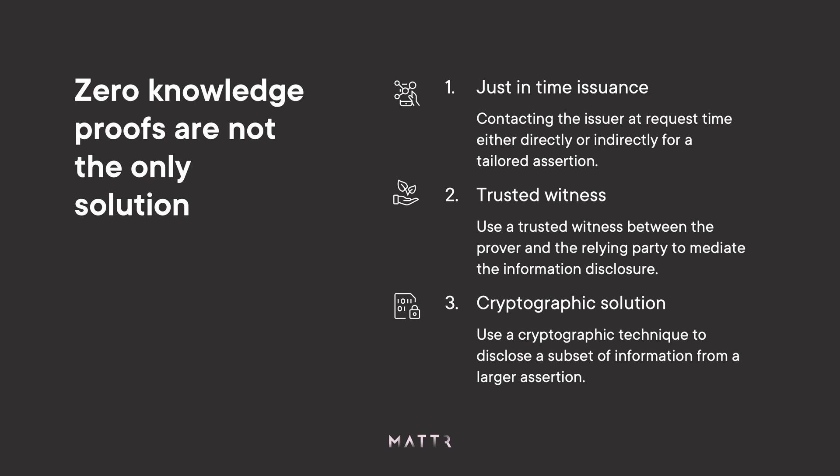Zero knowledge proofs are not the only solution to a selective disclosure or data minimization problem. There are solutions out there today — OpenID Connect has made the just-in-time issuance flow quite popular, where you dial into the authority on information and say 'I need this assertion about this user just in time,' and create them on the fly with the information required for that particular interaction.